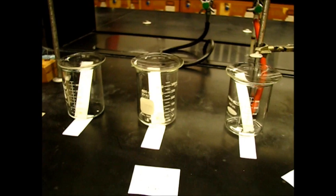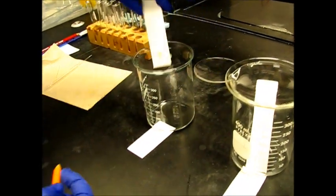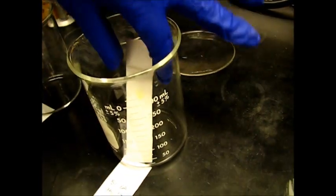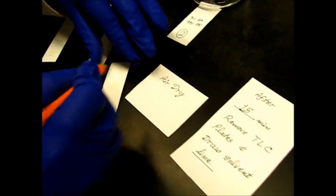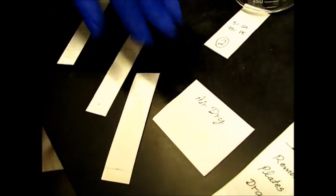And then we're going to run it for 10 to 15 minutes. After 15 minutes, we have to remove our TLC plate and draw our solvent line. We're going to gently remove it and immediately mark our solvent line before it evaporates. It evaporates really quickly. Same thing with the second one. We immediately draw the solvent line. And then we let them air dry, which will be pretty fast.